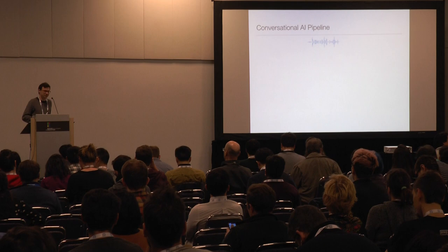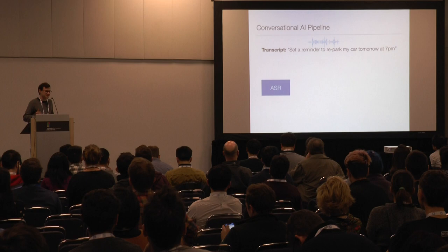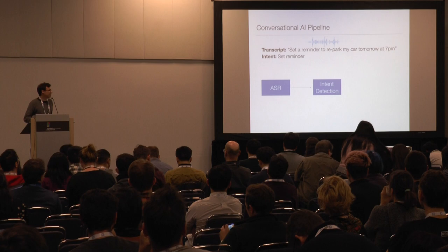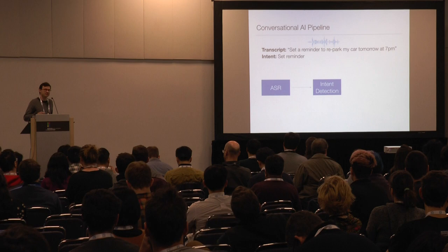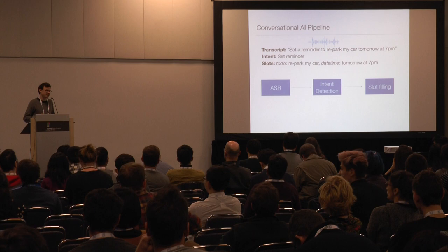When you use a conversational AI system and you issue a command such as 'set a reminder to repark my car tomorrow at 7 p.m.', the first component is some ASR system that transcribes the data. The second component tries to detect the intent that a user had. The third component figures out what are the slots for that given intent — the arguments needed to execute that intent.